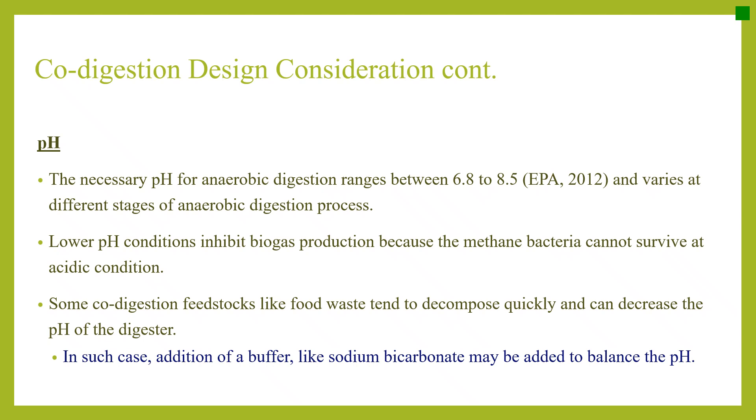The necessary pH for anaerobic digestion ranges between 6.8 to 8.5 and varies at different stages of the process. Lower pH conditions inhibit biogas production because methane bacteria cannot survive in acidic conditions. Some codigestion feedstocks like food waste tend to decompose quickly and can decrease the digester pH. In such cases, a buffer like sodium bicarbonate may be added to balance the pH.